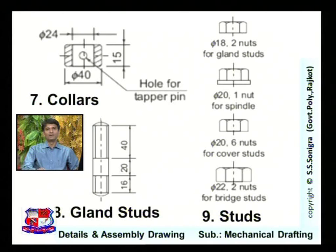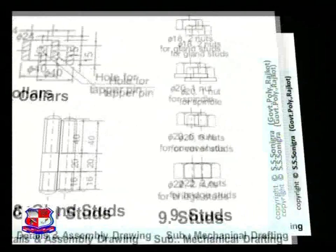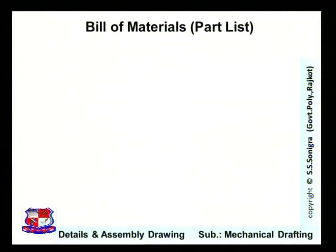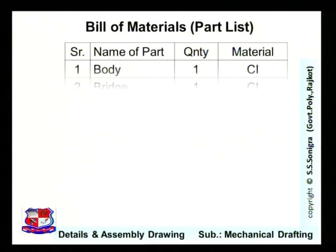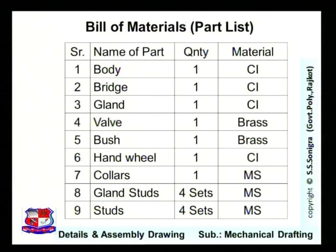This shows the detailed drawing of each component of the steam stop valve used in a boiler to control the flow of steam. The bill of material includes: part 1 — body, quantity 1, cast iron; part 2 — bridge, quantity 1, cast iron; part 3 — gland, quantity 1, cast iron; part 4 — valve, quantity 1, brass; part 5 — bush, quantity 1, brass; part 6 — hand wheel, quantity 1, cast iron; then collar, quantity 1, mild steel; gland studs, 4 sets, mild steel; and studs, 4 sets, mild steel.